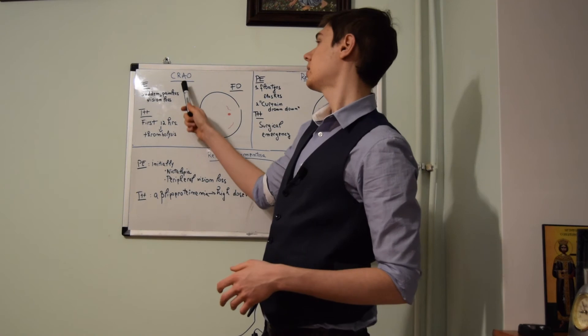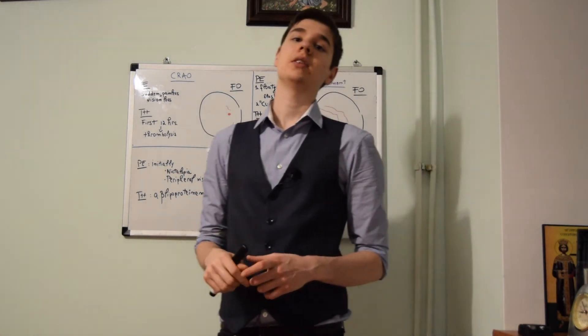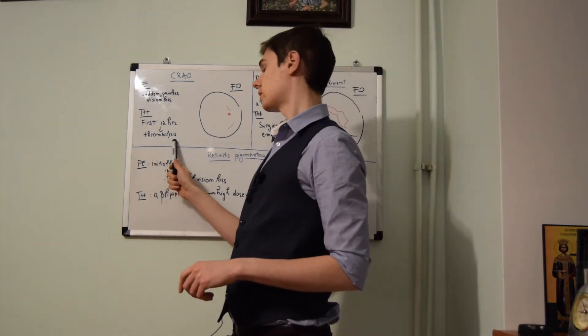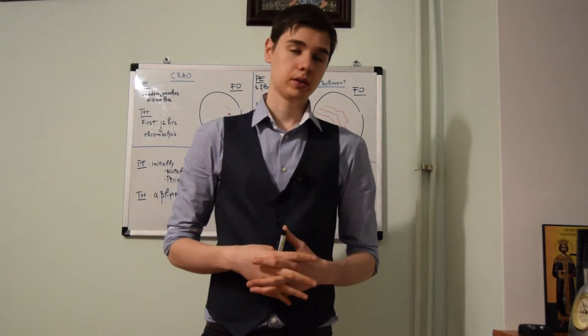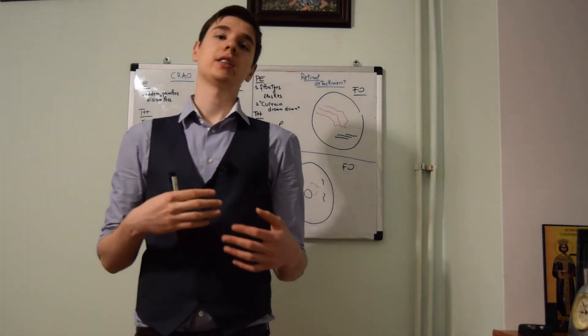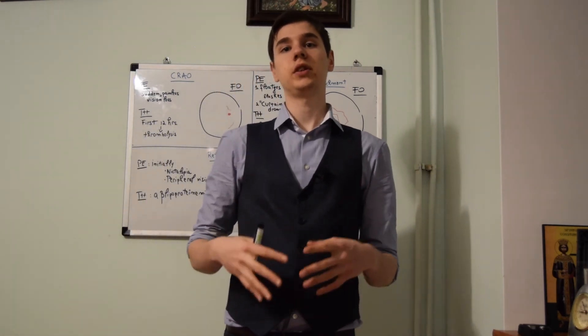For central retinal artery occlusion, the treatment is given in the first 12 hours, namely thrombolytics. If by contrast, the question stem proves the patient has giant cell arteritis, then corticosteroids are the first treatment.